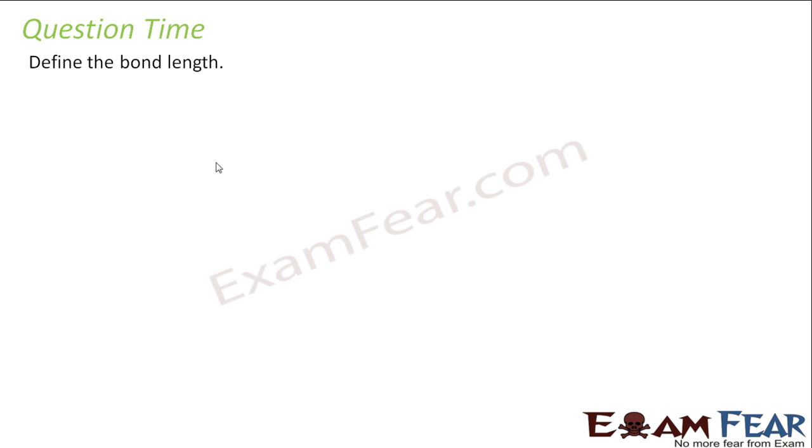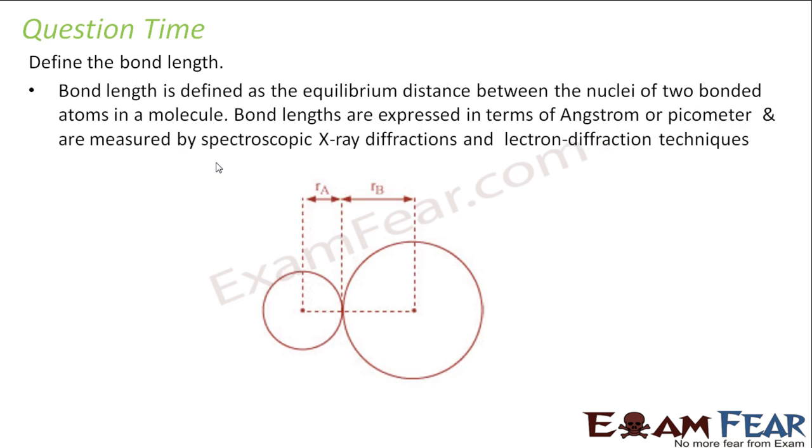What is bond length? So bond length is nothing but equilibrium distance between the nuclei. I have 2 bonded atoms in a molecule. So there are 2 atoms in a molecule. The equilibrium distance between these is nothing but sum of the covalent radii actually. And they are expressed in terms of picometer or angstrom and they are measured by x-ray diffraction and spectroscopic and there are so many electron diffraction techniques.